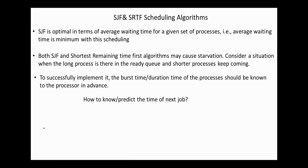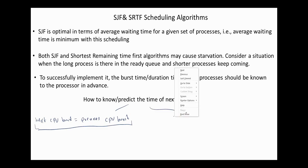Both shortest job first and shortest remaining time first algorithms may cause starvation. Consider a situation where a longer process is in the ready queue and shorter processes keep coming. To successfully implement these algorithms, the burst time of the processes should be known to the processor in advance. One way is to assume that the next CPU burst equals the previous CPU burst, or it can be predicted using the exponential average of the previous CPU bursts.